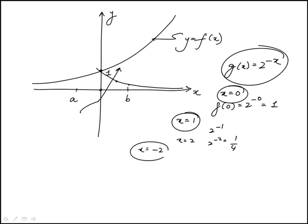Now if you go on the other side, for example x is minus 2, this would be 2 to the minus minus 2, which is 2 to the 2 or 4. So its value would actually increase, so it would look something like this.